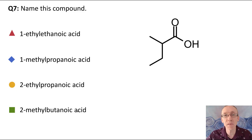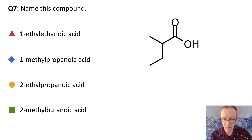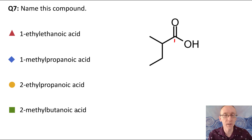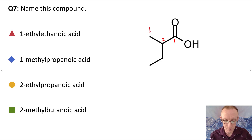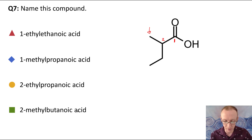Question seven: name this compound. With a carboxylic acid, it's really important that we start numbering at the carbon that's part of the carbonyl of the carboxylic group — so that's number one. Number two is the next carbon, and then we keep on numbering along the longest chain. We don't go to the branch position because that's not the next carbon in the longest chain — the longest chain goes out the other way.